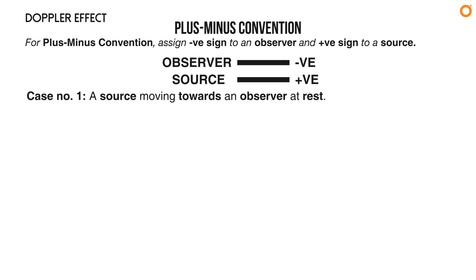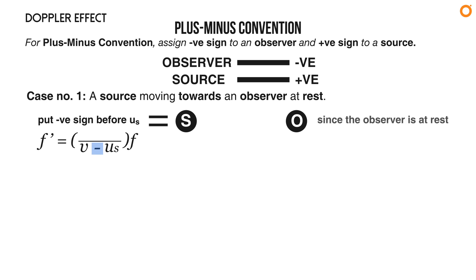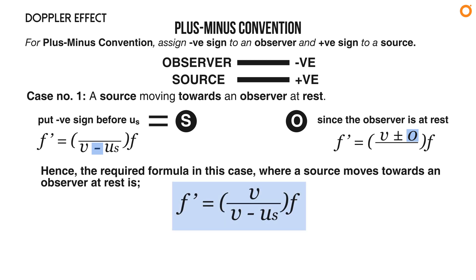Case number one: a source moving towards an observer at rest. The source (considered positive) moves towards the observer (considered negative), so put a negative sign before uₛ. Since the observer is at rest, u₀ is zero. The required formula is: f prime equals to v divided by (v minus uₛ) times f.